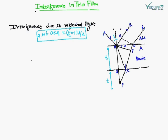We need to discuss how interference is possible in reflected light. In our diagram, we can see that there are two layers - let GH be the upper surface and G1H1 be the lower surface of a transparent film of uniform thickness t and refractive index mu.